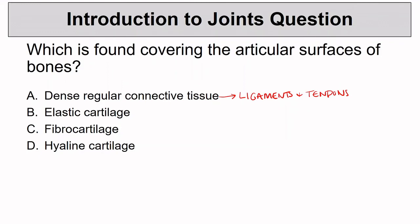Do we find elastic cartilage in joints? No, we don't. How about fibrocartilage? We're getting closer, but these are going to be more supportive structures that aren't in all joints, though we do find them frequently. Now, hyaline cartilage — there it is. This is the articular cartilage, and we'll remember from the bone videos that this is hyaline cartilage that's a remnant of endochondral ossification.